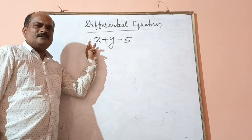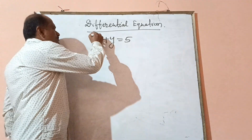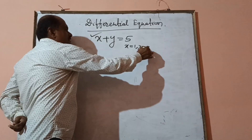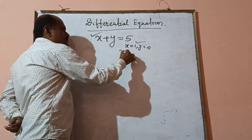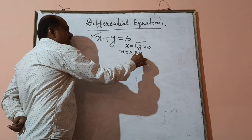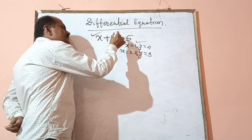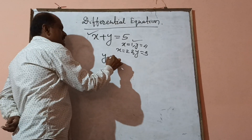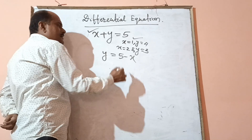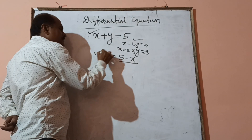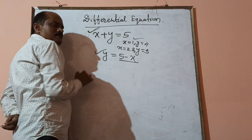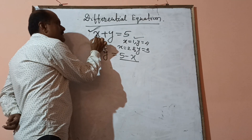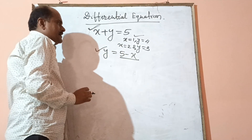What is its solution? There are infinite number of solutions of this equation. If x is equal to 1, y is equal to 4, this is a solution. If x is equal to 2 and y is equal to 3, this is another solution. There are infinite number of solutions, because y is equal to 5 minus x. For different values of x, we get different values of y which satisfy this equation.